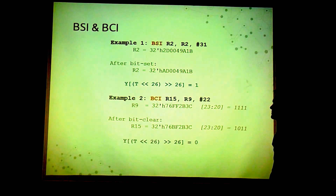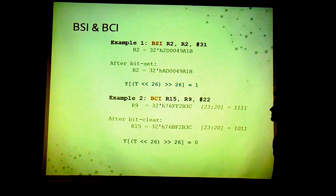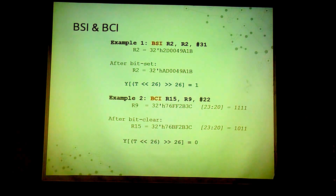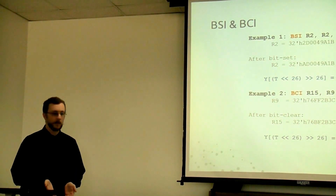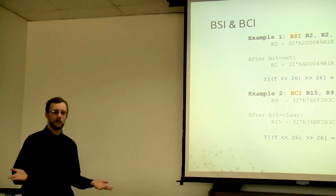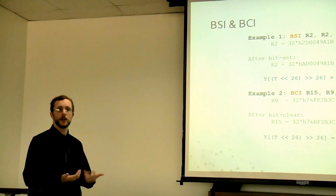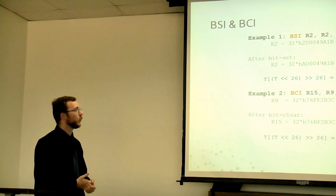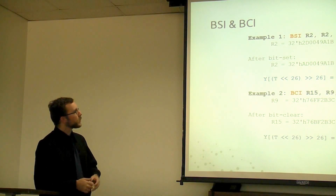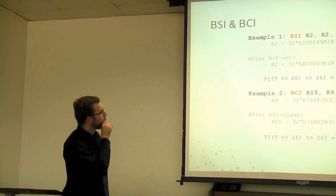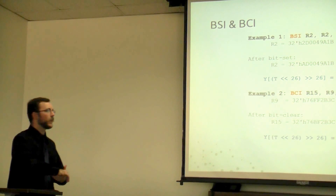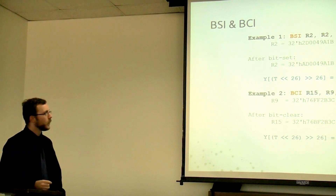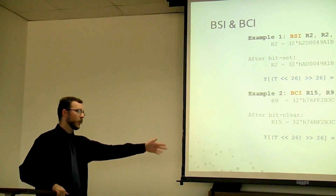Bit set immediate and bit clear immediate are really where we focus on the embedded systems and flexible design angle. If you're coding for a microcontroller and need to enable parity — all you want to do is set that one bit. Bit set allows you to set any of the 32 bits in a register; it's a cleaner way than OR-ing it in. We shift out anything unnecessary, leaving the five bits as an index, then set that appropriate bit to one. Bit clear does the same thing but clears to zero.